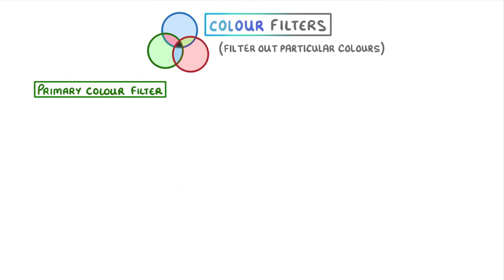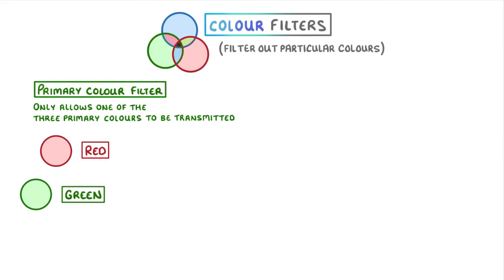A primary colour filter is one that only allows one of the three primary colours to be transmitted, so red, green, or blue.